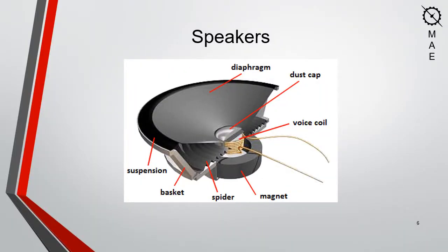Speakers take electrical signals from the amplifier and convert them into the physical vibrations that create sound and pressure waves at nearly identical frequencies as the original input signal — in our case, from the guitar strings themselves. The signal is sent through a voice coil in the back of the speaker, which ultimately causes the diaphragm to rapidly move back and forth at nearly the exact same frequency as the guitar string.